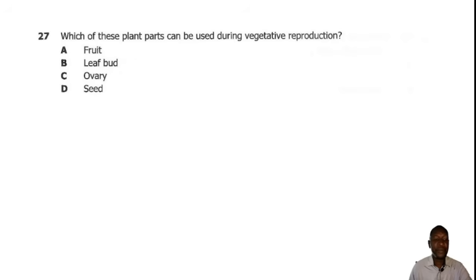Question 27. Which of the following plant parts can be used during vegetative reproduction? Vegetative reproduction is also what is known as vegetative propagation. You can grow plants vegetatively using tubers, leaves, rhizomes. So the correct answer is B.